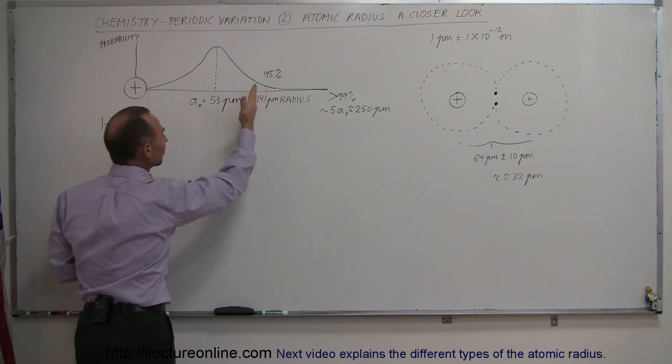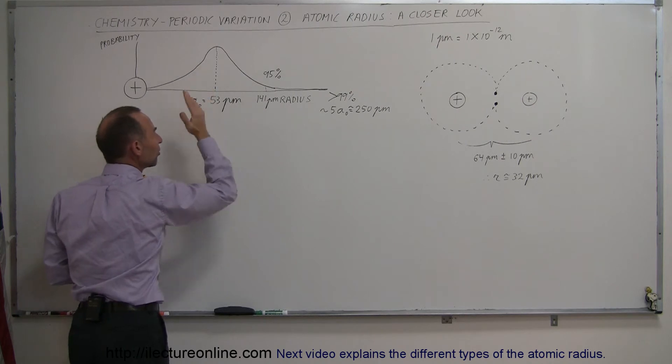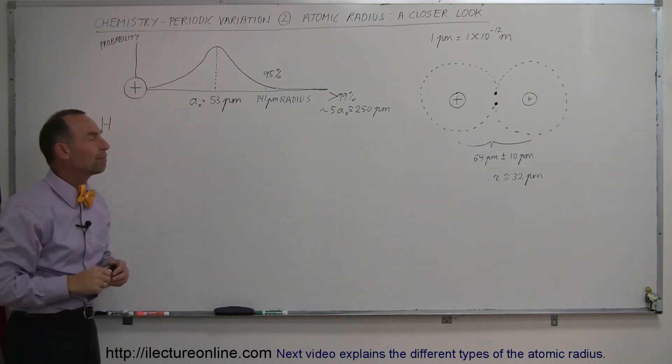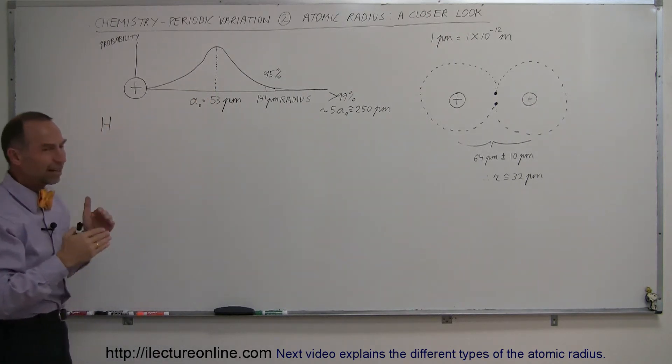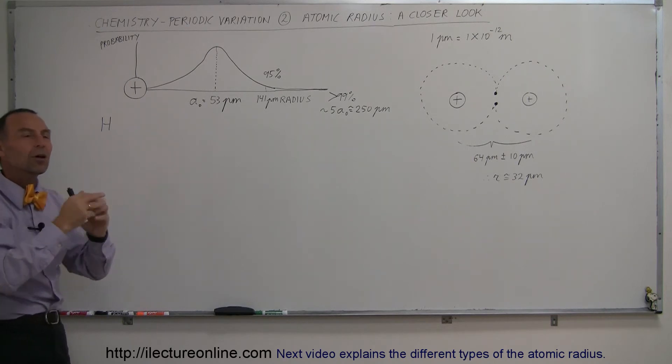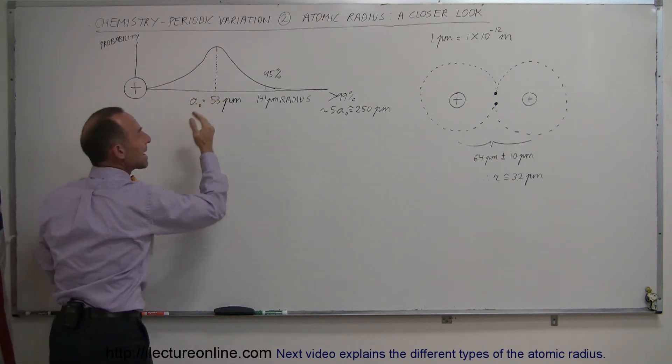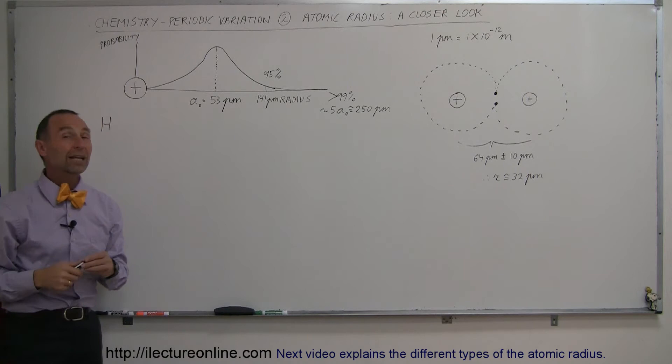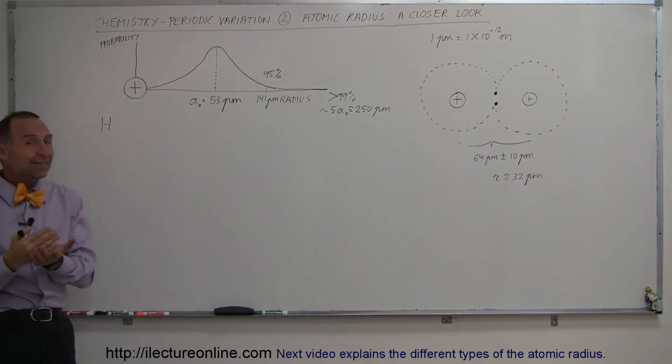Sometimes electrons are further away, sometimes they're closer, they spend most of the time at the rough distance of 53 picometers, and so it's kind of a fuzzy, it's almost like a fuzzy ball, and you're not quite sure where the edge of that ball is, where the edge of that radius is, and hence it's not that easy to figure out the radius of an atom.